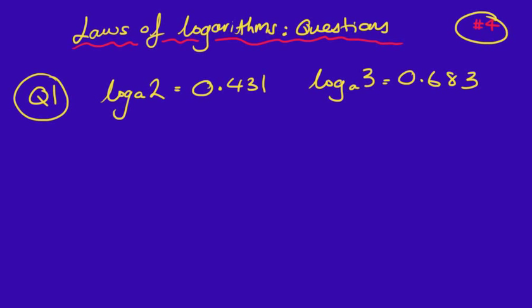Hi guys, welcome to the fourth lesson in the Laws of Logarithms series. This is where we are going to be doing some questions on the Laws of Logs from the last lesson. The question is giving you two values: log2 is equal to 0.431 and log3 is equal to 0.683. The first one is to find the value of log 6.